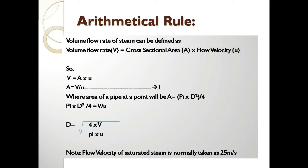V equals A multiplied by U. Solving for area: A equals V divided by U. The cross-sectional area of a pipe is equal to π D² divided by 4, where D is the diameter of the pipe.